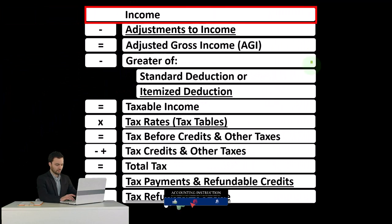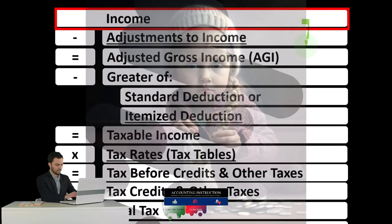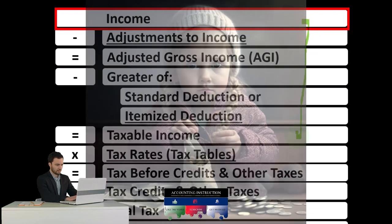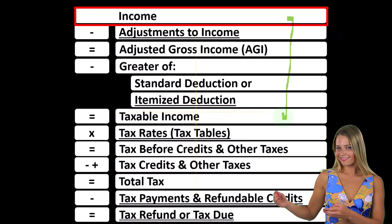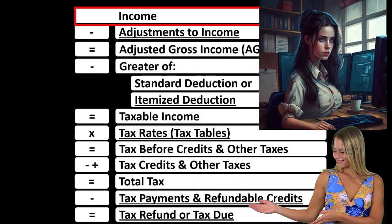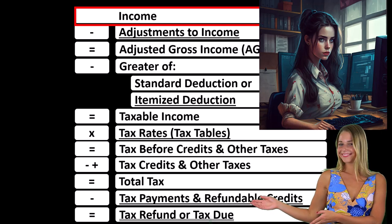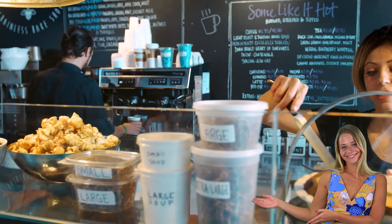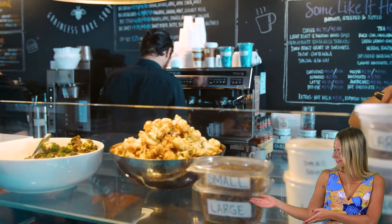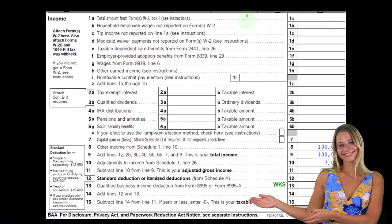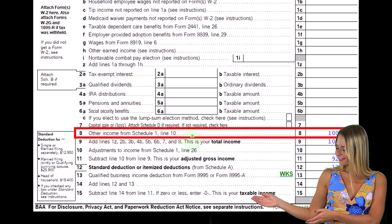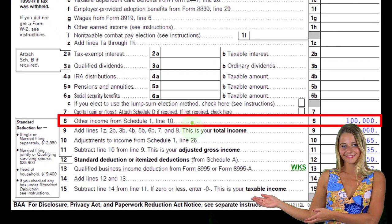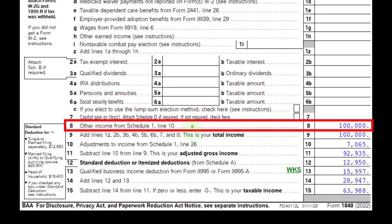Looking at the income tax formula, we're focused on line one income. The first half of the income tax formula is in essence an income statement, but just an outline or scaffolding with other forms and schedules flowing into it — for example, the Schedule C, which is in essence an income statement in and of itself. Business income minus business expenses gives us the business net income, which would flow into line one income of our income tax formula. This is page one of Form 1040, where the Schedule C flows into Schedule 1, which flows into line eight of Form 1040.